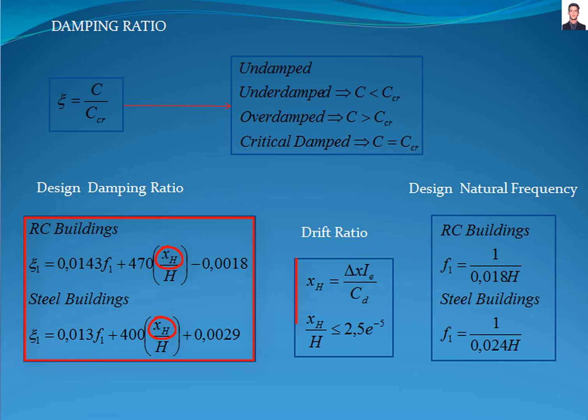The drift ratio is calculated with the equation xgh = ΔxIs/Cd, where Cd is the deflection amplification factor and Is is the importance factor. Note that the drift ratio limitation cannot exceed 2.5 × 10^-3.